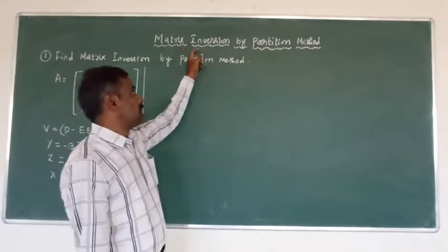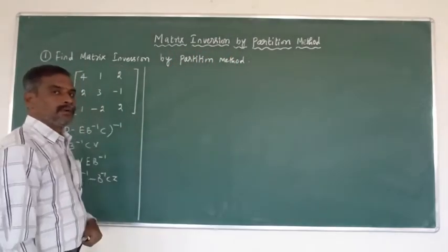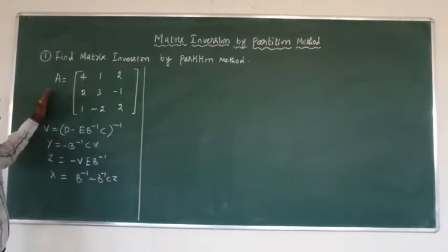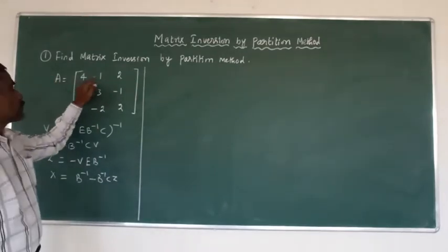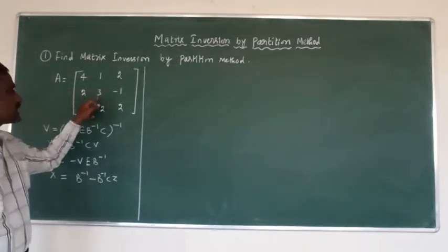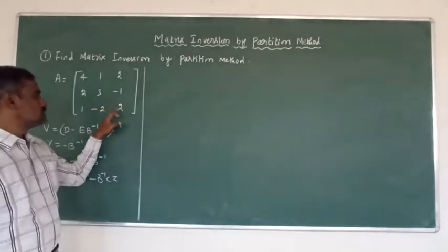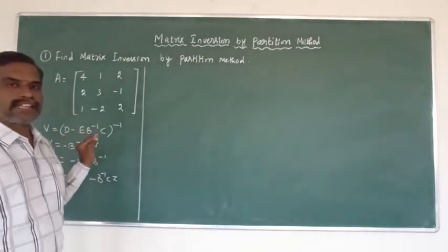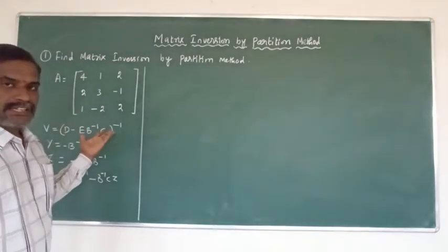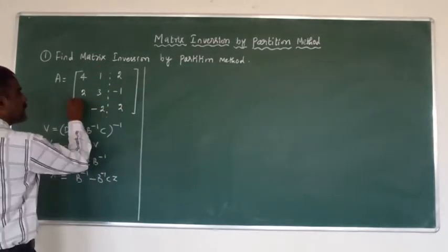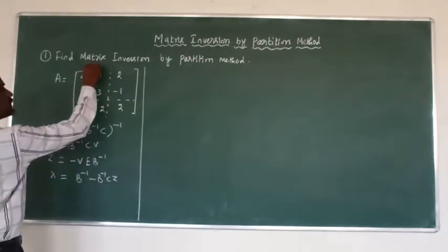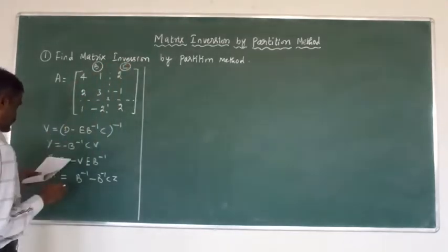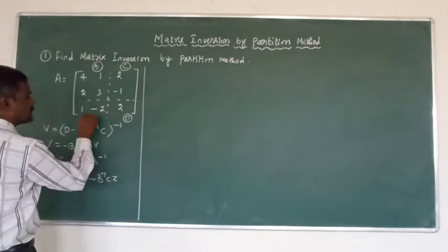First sum — matrix inversion by partition method. Now to find out: the given matrix A equals [4, 1, 2; 2, 3, −1; 1, −2, 2]. This is a 3×3 matrix. First we have to partition it. Partition like this: this part is B, this is C, this is D, and this is E.